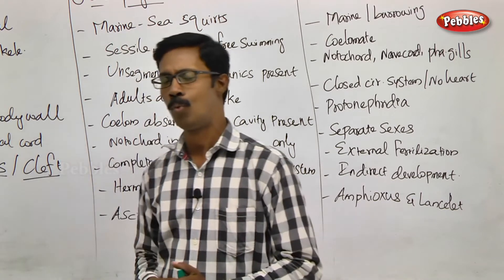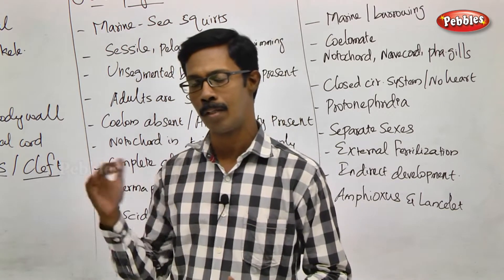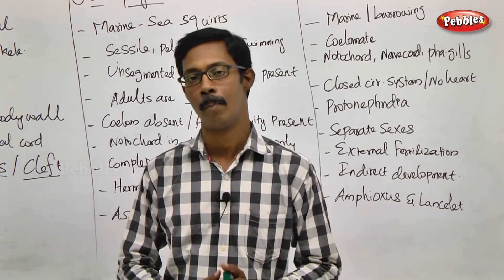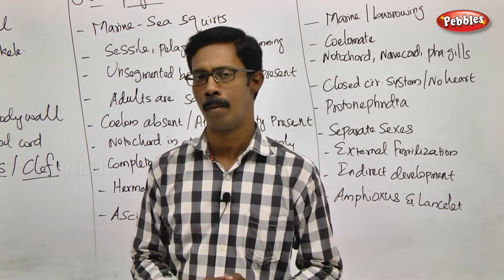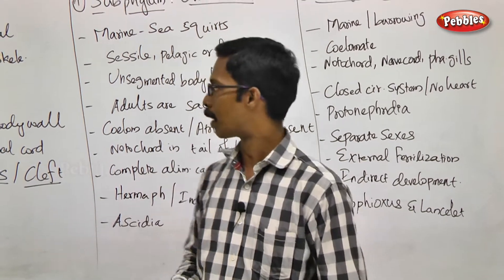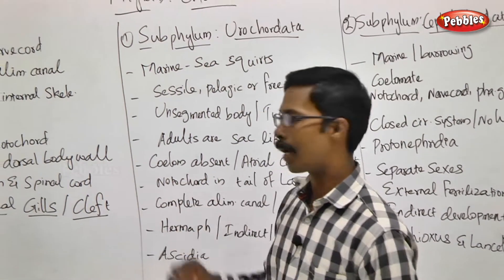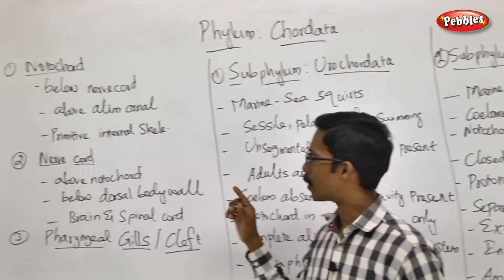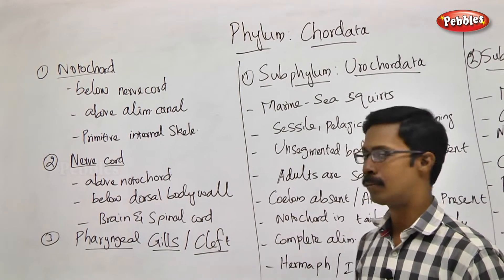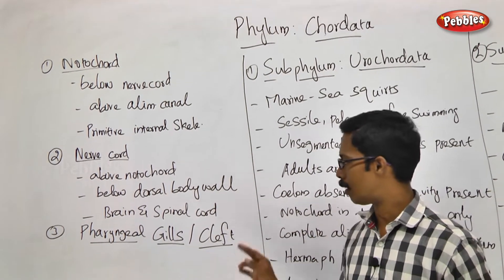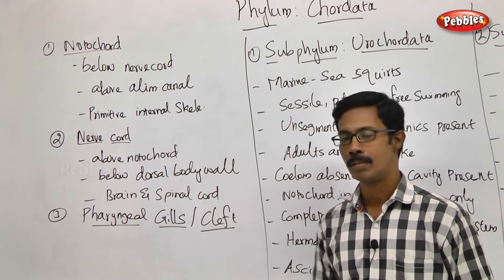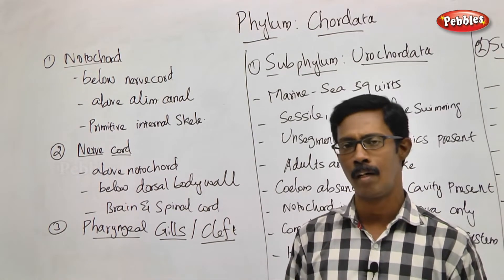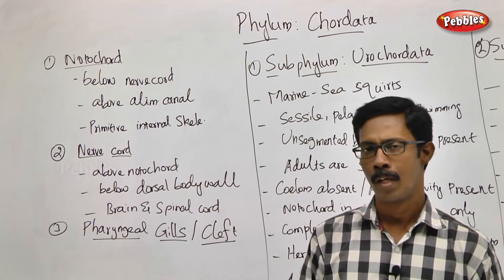So what are the three characters? We will see how we can find the sub-phyla in detail. The three characters are: presence of notochord, presence of nerve cord, and presence of pharyngeal gills or cleft.